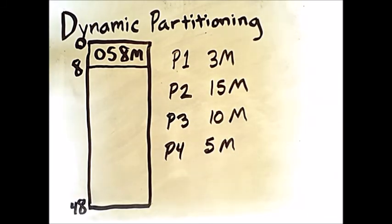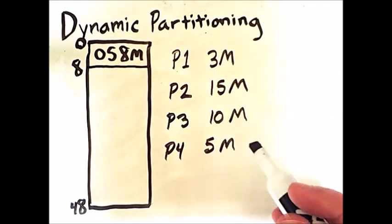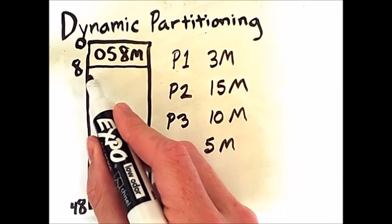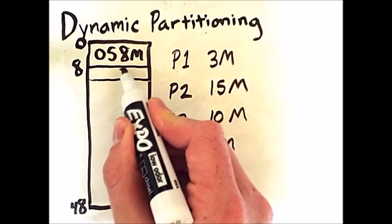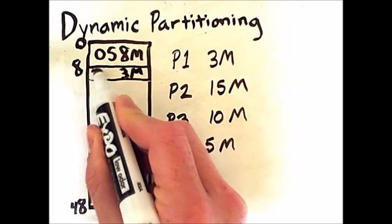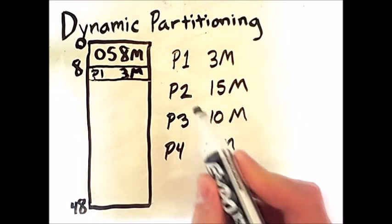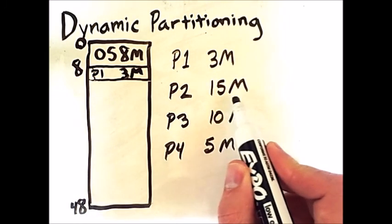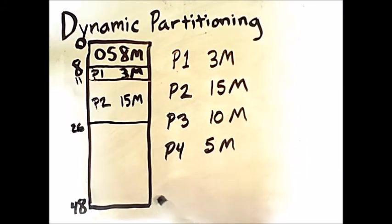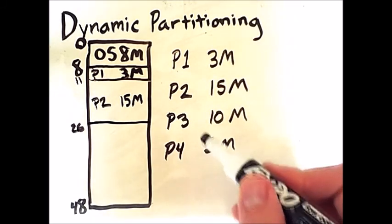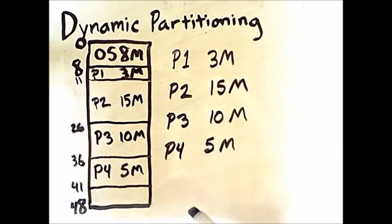Let's see how these processes fill out memory. When the first memory request comes in, we dynamically create a partition of just the right size, exactly 3 megabytes, to hold process 1. When process 2's request comes in, we set up a partition of size 15 megabytes. And this process continues with processes 3 and 4. Because each partition exactly fits each process, there is no internal fragmentation.